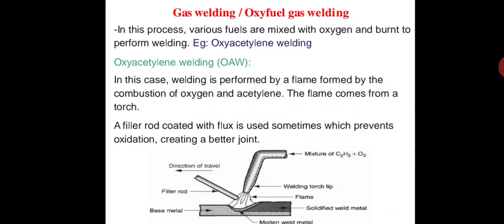The flame comes from the torch. Pure oxygen is used instead of air to increase the flame temperature and to allow localized melting of the work material at room temperature. A torch is used to weld the metal. In this process, heat transmitted from the flames heats the juncture of two metals to a certain temperature so that they melt and fuse together.